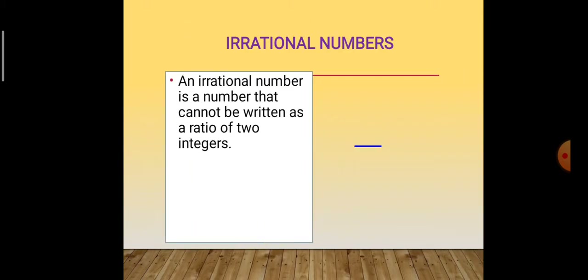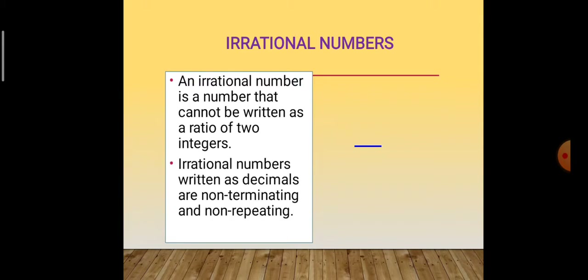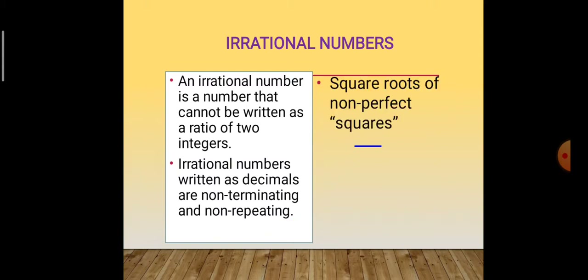Let us learn a few more about irrational numbers. An irrational number is a number that cannot be written as a ratio of two integers. Irrational numbers written as decimals are non-terminating and non-repeating. Examples include square roots of non-perfect squares, such as √17. All non-perfect squares are irrational numbers. √5 is also an irrational number.